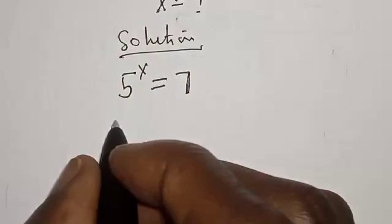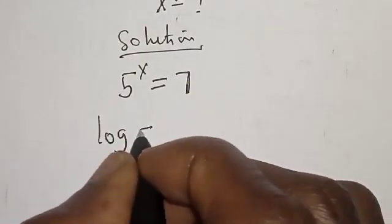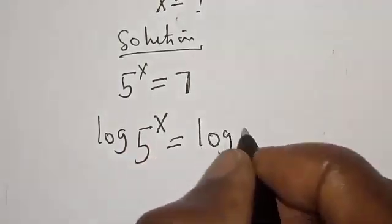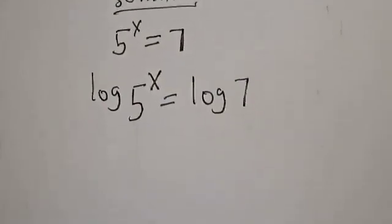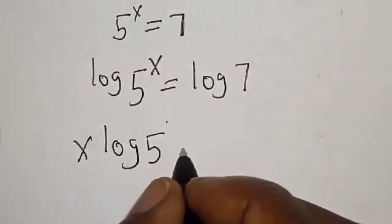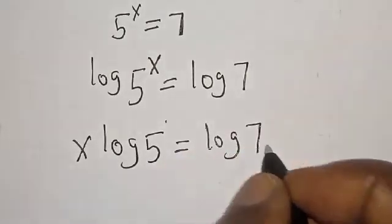Now, let's take the log of both sides. Log 5 raised to power x is equal to log 7. Now, we have x log 5 is equal to log 7.